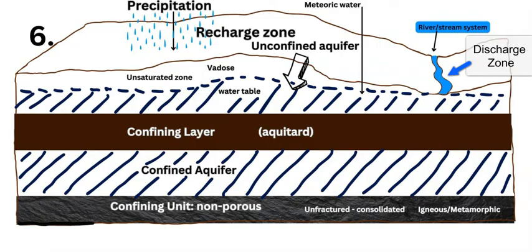A confined aquifer is sandwiched between two layers of confining beds called aquitards, which don't allow water to pass through. This confined aquifer is under pressure between these two layers. An unconfined aquifer sits above the aquitard layer with only one confining layer beneath it; it is open to the unsaturated or vadose zone and can receive new water through the recharge zone. The confined aquifer only has a portion of its area under a recharge zone — it recharges from a specific area and then flows confined between two aquitard layers.